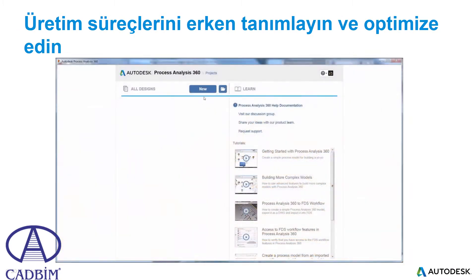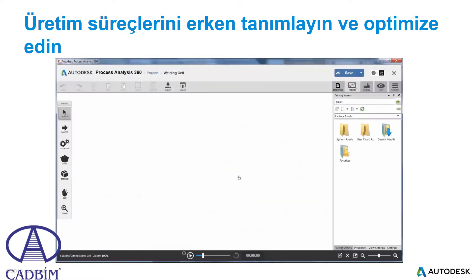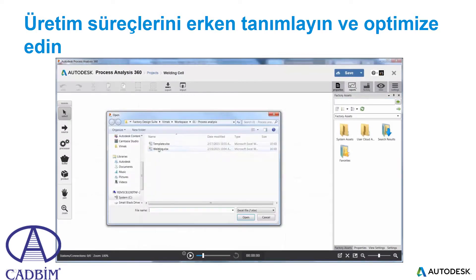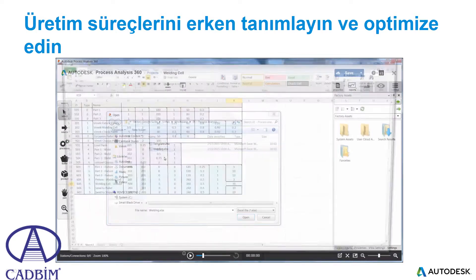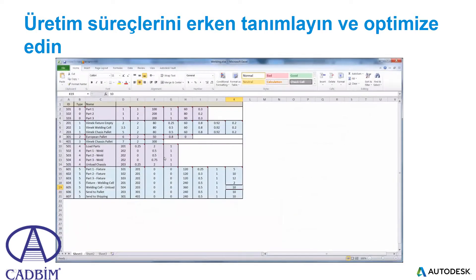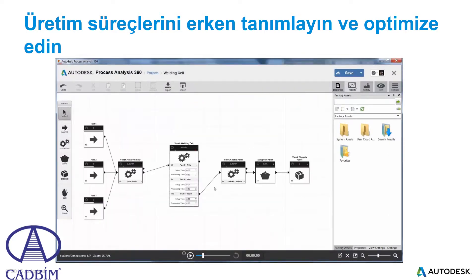Welcome to Process Analysis 360, a web-based product that helps engineers and system designers model, study, and optimize manufacturing processes. Take advantage of existing data from the shop floor to populate the study or use the toolbar for dragging new block diagrams into the workspace.